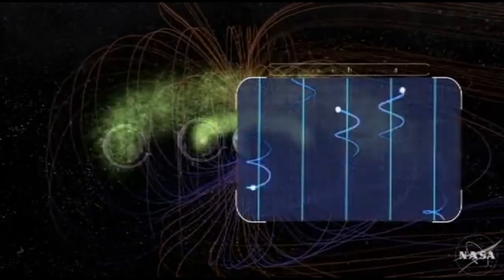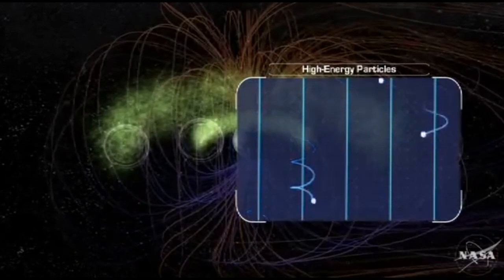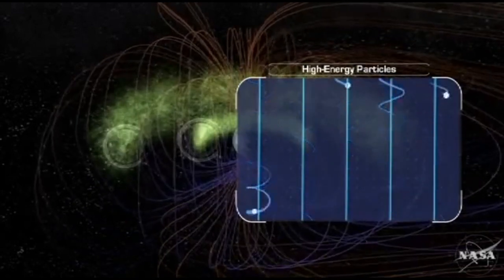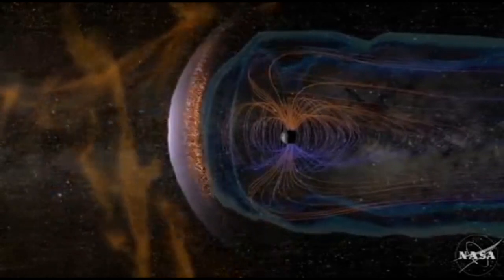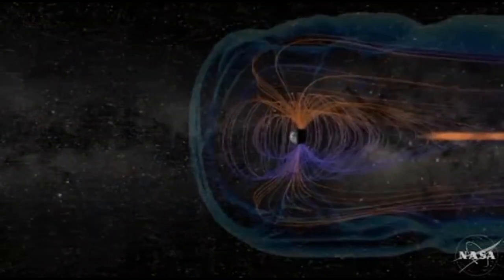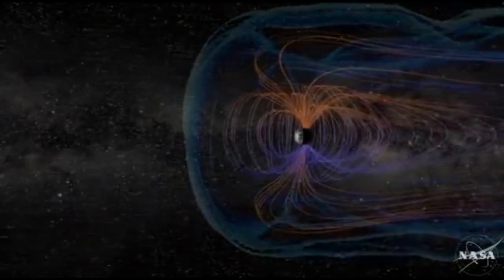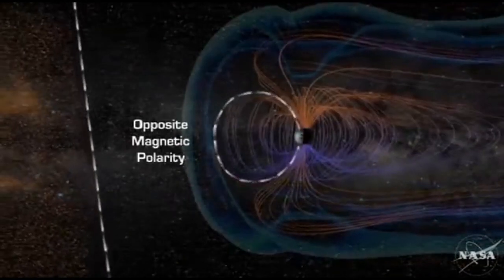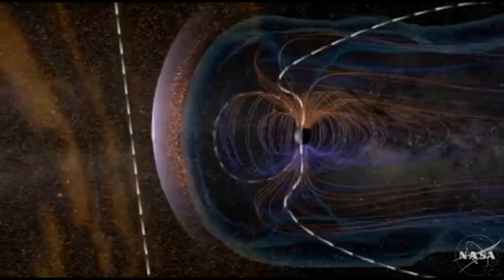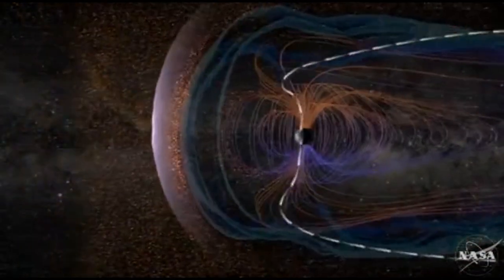The third population consists of high-energy particles trapped in two regions called the Van Allen radiation belts. These particles move along the field lines toward the poles until they are reflected back, creating a bouncing movement. Charged particles from the Sun leak into the magnetosphere over the northern and southern magnetic poles and travel to the magnetotail, adding to a reservoir called the plasma sheet. Particles can also enter during magnetic reconnection — when the polarity of the solar wind is opposite to that of the magnetosphere, the magnetic field lines of the incoming plasma connect with those of the magnetosphere.